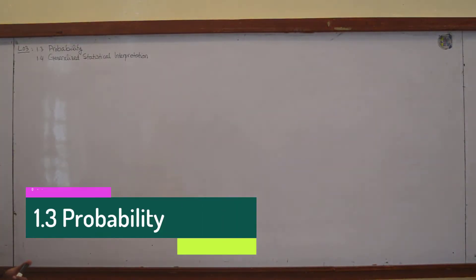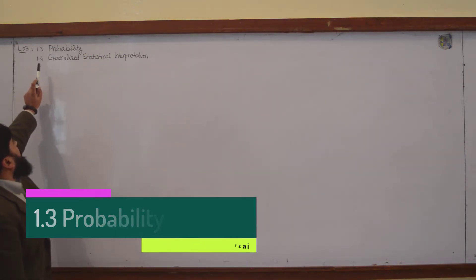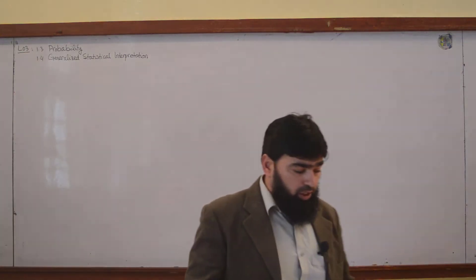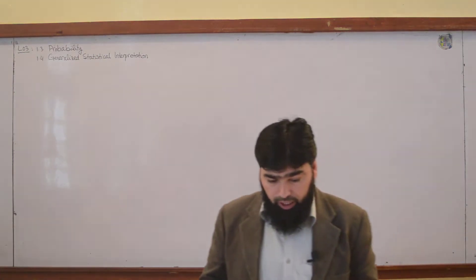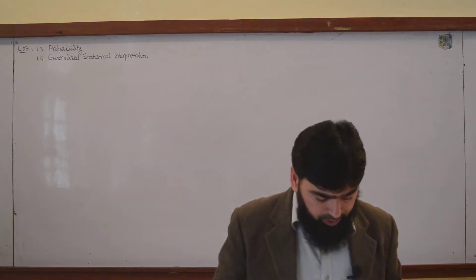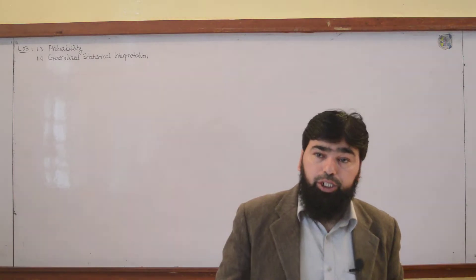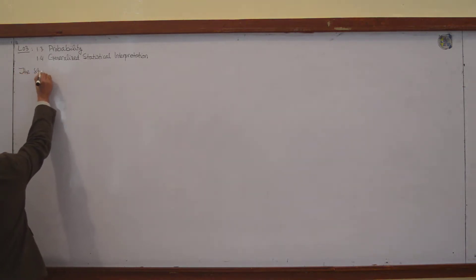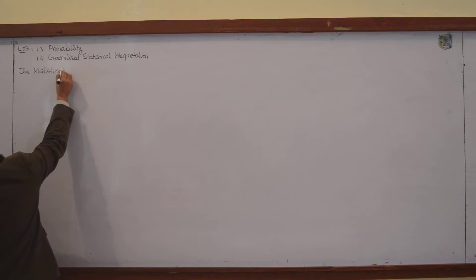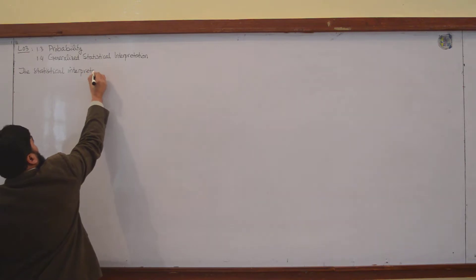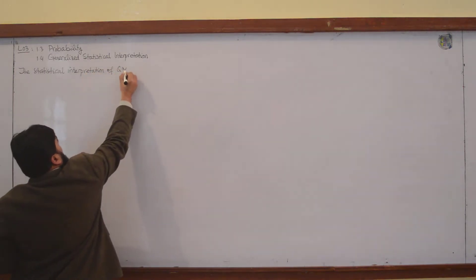Today we will discuss in the third lecture the probability, which is section 1.3, and the generalized statistical interpretation, which is section 1.4 in your book. Before going into the probability, let me revise a little bit again the statistical interpretation of quantum mechanics.